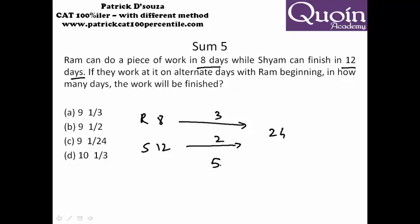That means every 2 days they can do 5 units of work. So in 8 days they will complete 20 units of work. Then Ram begins. Ram does 3 units of work, which is 23 work in the 9th day.